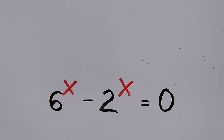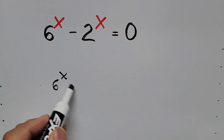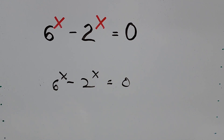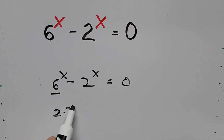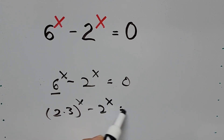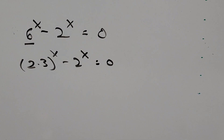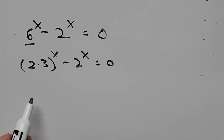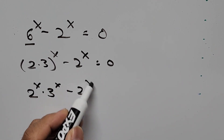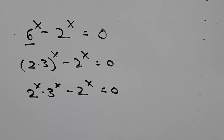Assuming you already know the answer, let's now solve formally. We have 6 to the power of x minus 2 to the power of x equals zero. On the left-hand side, 6 can be written as 2 times 3, so this becomes 2 times 3, all to the power of x, minus 2 to the power of x equals zero. This term can be written as 2 to the power of x times 3 to the power of x.